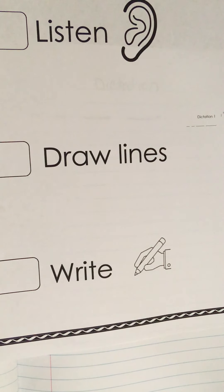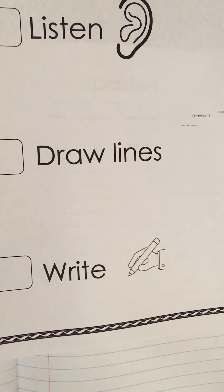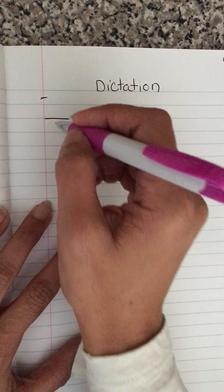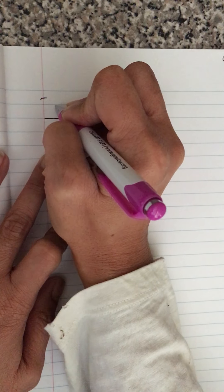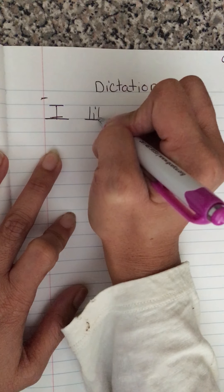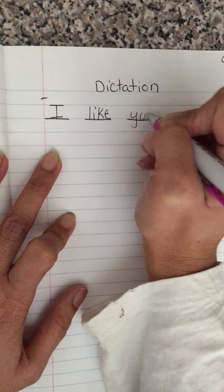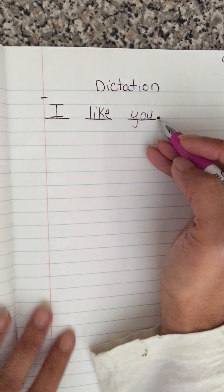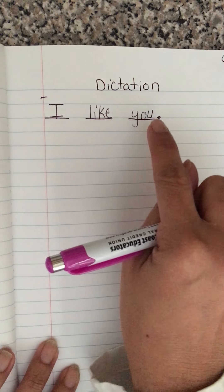The last step for dictation is to write the dictation. This is where you're going to start writing the words I said out loud. Don't worry if you don't write it all completely or correctly the first time, because we're just starting and we're going to end up correcting it and learning from our mistakes. The third step is to write — so if the sentence was 'I like you,' I write those words on top of each of the lines. Complete sentences start with a capital letter: 'I like you.' End of sentence, so I add punctuation.